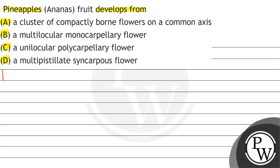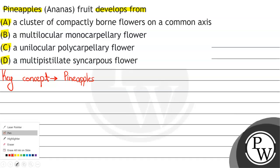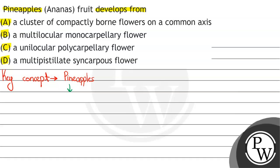Let's look at the concept of this question. The concept of this question is pineapple. Pineapples — जो pineapples होते हैं, इसे हिंदी में अननास बोलते हैं. तो pineapple fruit जब create होता है, तो ये usually produce करता है लगभग 200 flowers को. 200 flowers.